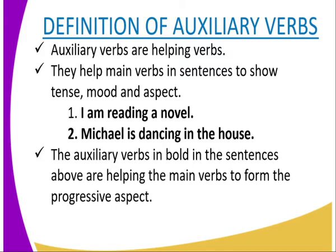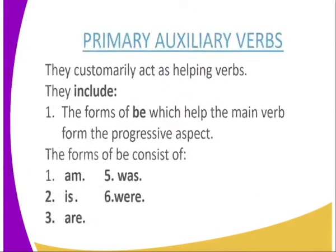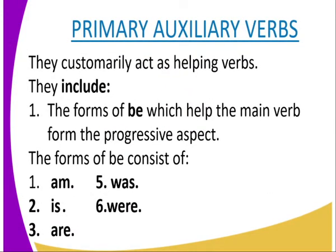We begin with the primary auxiliary verbs. They customarily act as helping verbs. They include forms of 'be,' which help the main verb to form the progressive aspect. The forms of 'be' consist of: is, are, was, and were.